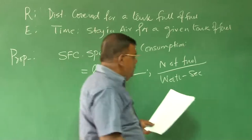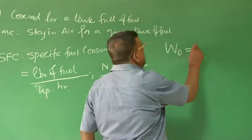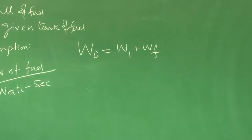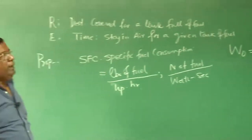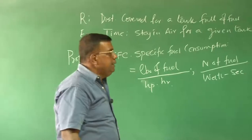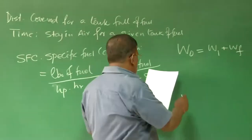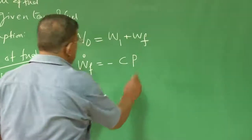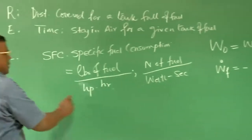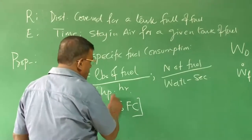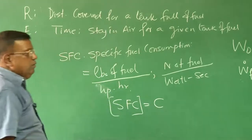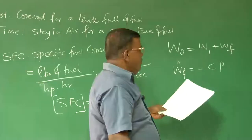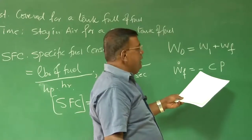If I write W0 = W1 + Wf: W0 is the gross weight, W1 is all the weight except the fuel weight. Then I can write Ẇf = −C × P. What is C here? This is SFC — by notation we will use letter C. Since it is Ẇf, the rate of change of fuel consumed, as per the definition Ẇf can be expressed as −C × P.